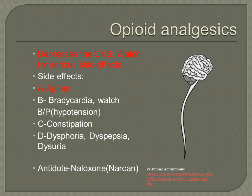Last is the three Ds: dysphoria, dyspepsia, and dysuria. Dysphoria is uneasiness — these medications can cause some confusion. Next is dyspepsia or abdominal discomfort; nausea and vomiting is a very common side effect. And lastly is dysuria, which is urinary retention. There is an antidote to these opioids, and that is naloxone, or Narcan.